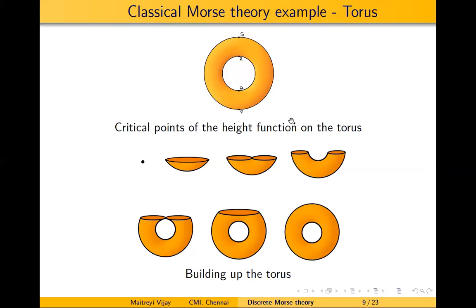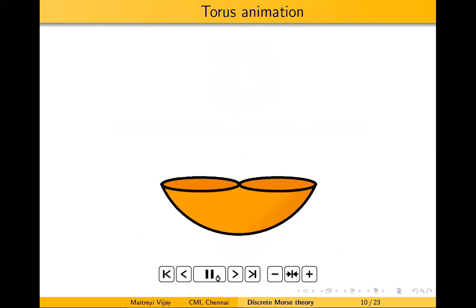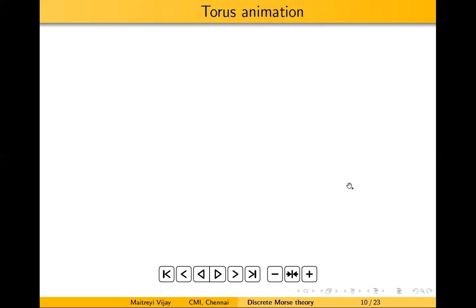Here is how the torus looks under the height function. At point P it's just a dot — a zero cell. Between P and Q, everything you get is homotopy equivalent to a cup or bowl. Between Q and R, it's homotopy equivalent to a cylinder. At R it looks like a torus with a hole. At S and beyond it's the full torus. So you are attaching one zero cell, two one-cells, and one two-cell — consistent with classical Morse theory. There's an animation showing the progression from bottom to top. That's all for classical Morse theory.